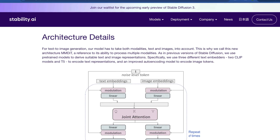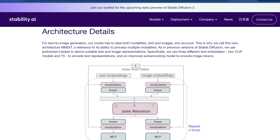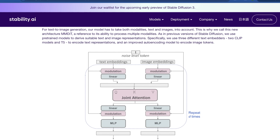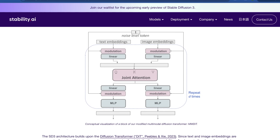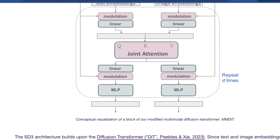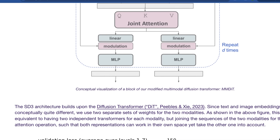The architecture details are pretty interesting. Initially with their announcement we had no clue how this was actually put together — we knew they were using the novel idea of diffusion transformers, but now we have a much better idea. They say for text-to-image generation the model has to take both modalities — text and images — into account, which is why they call this new architecture MMDIT, a reference to its ability to process multiple modalities. They use three different text embedders — two CLIP models and T5 — to encode text representations, and improved autoencoding to encode image tokens. You can provide both text embeddings and image embeddings into the same input, feeding into one joint attention transformer.